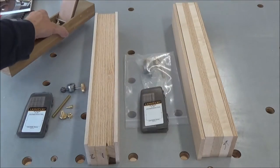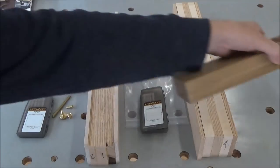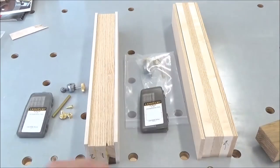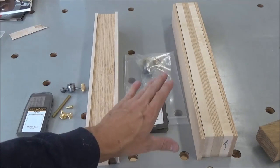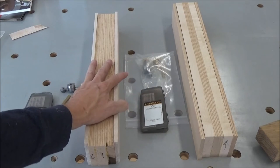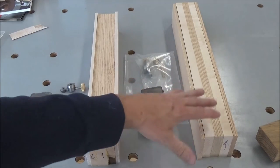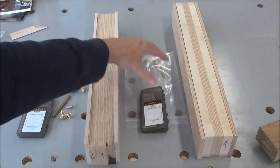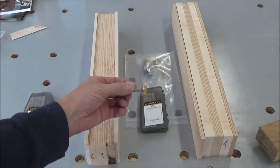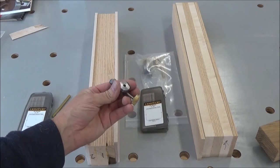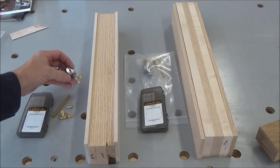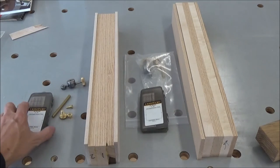The other thing that I want to make is a Veritas style wooden hand plane using their kit, which has a Norse style adjuster and it comes with everything you need, including the blade.